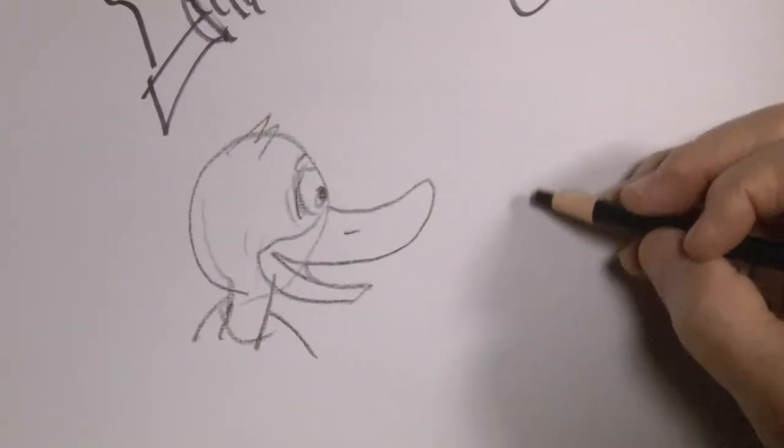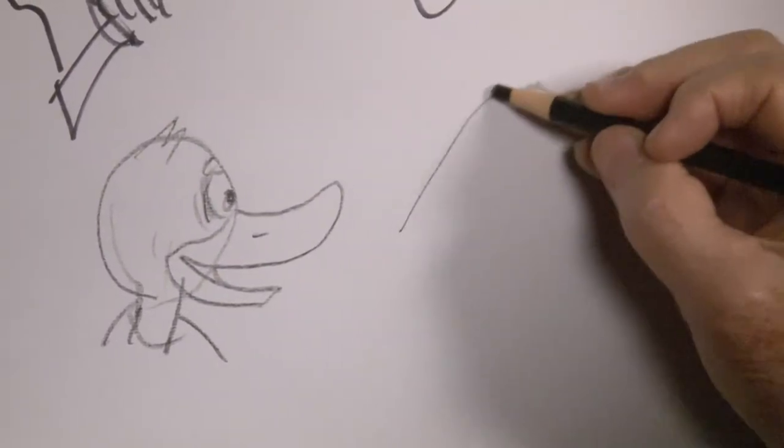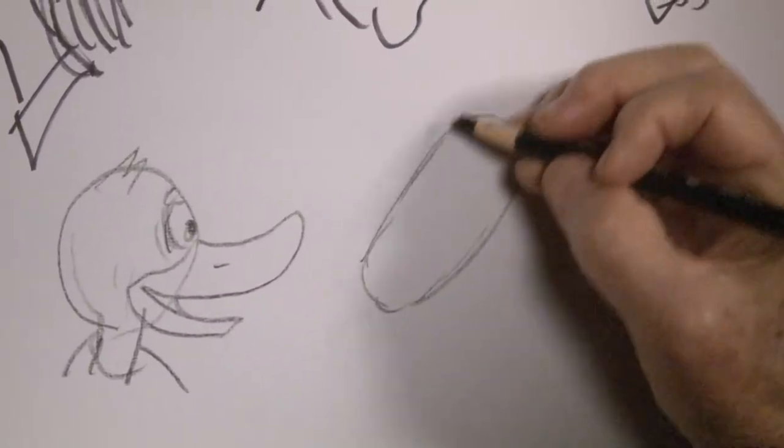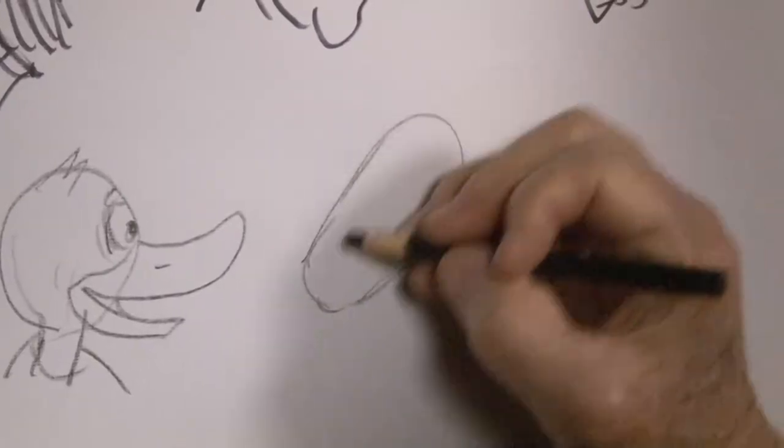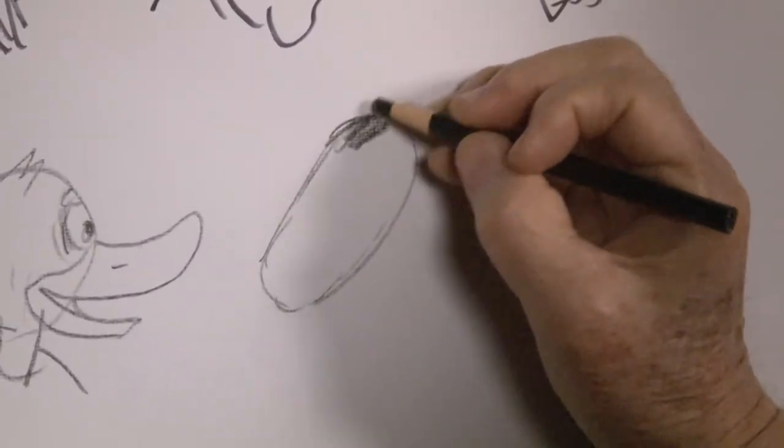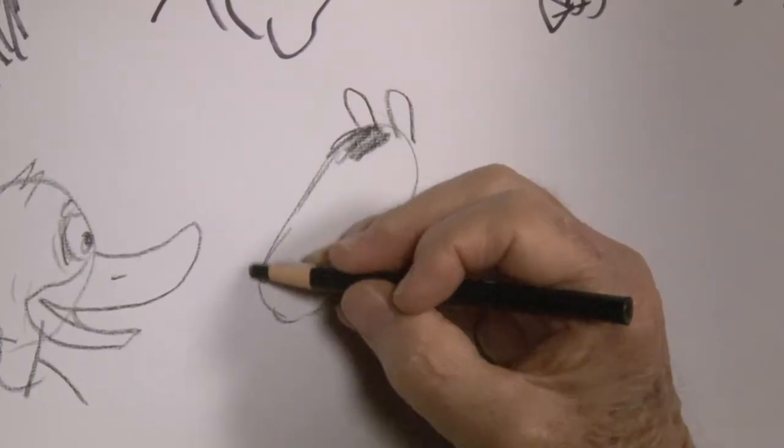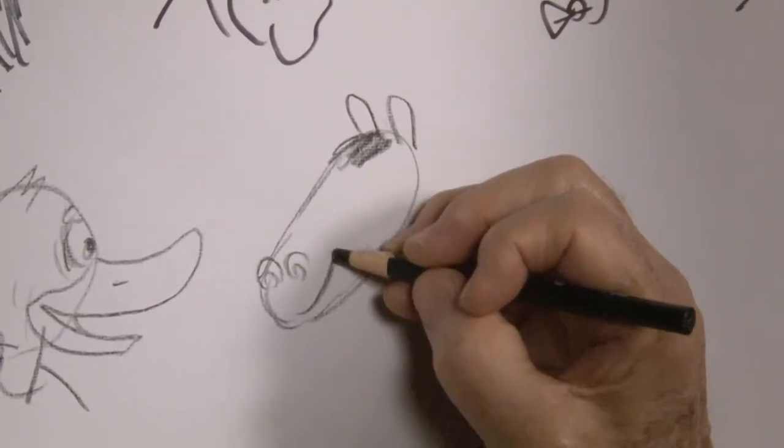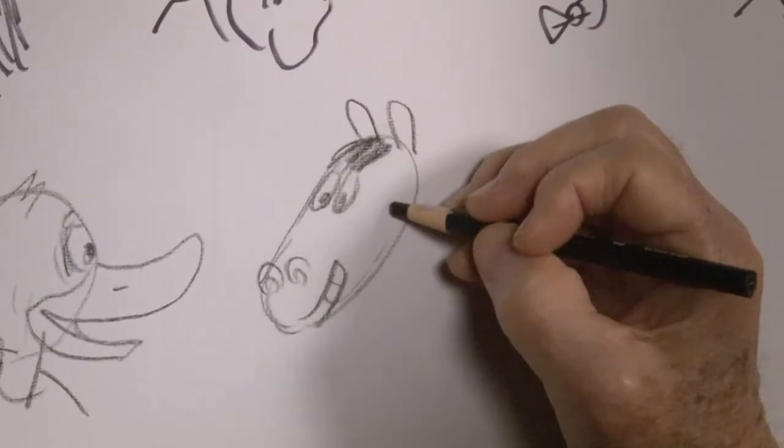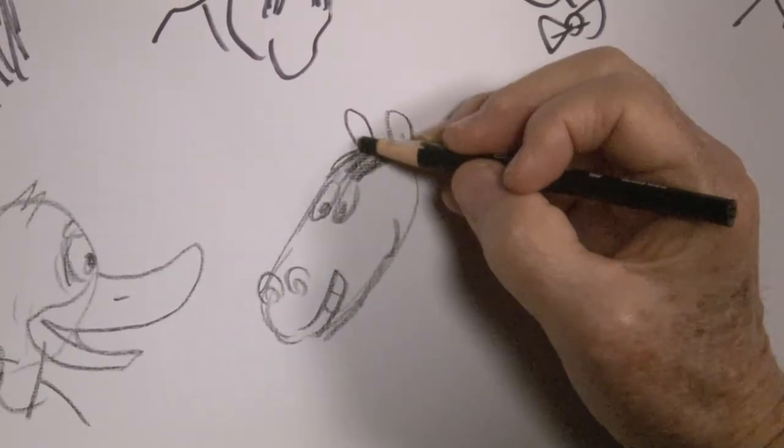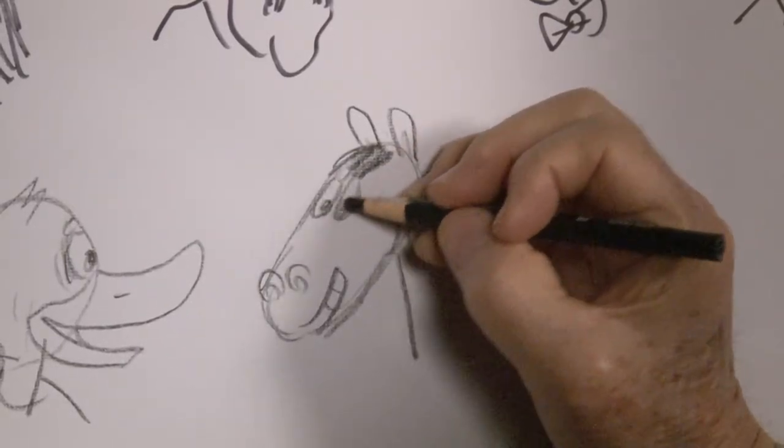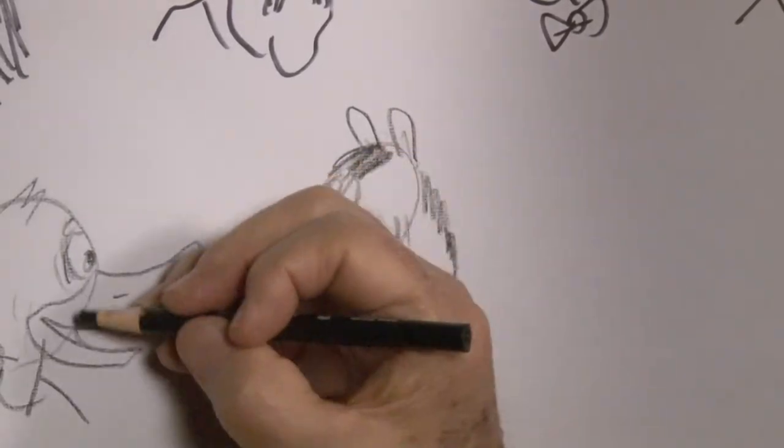You can even use an almost circular figure for an animal, a long-faced animal like a horse. Still using circular eyes, although you'll probably never see a real live horse with big eyes like that.